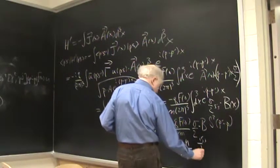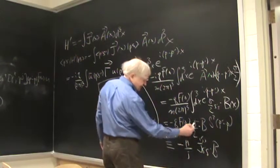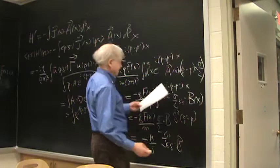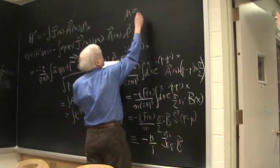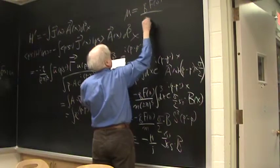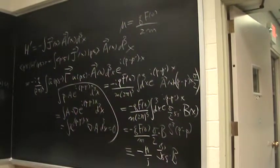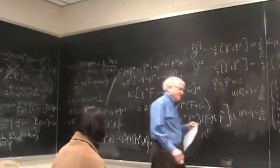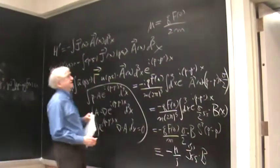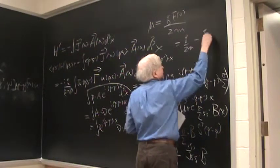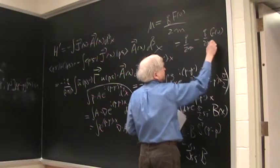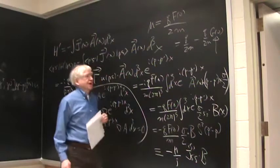times j j s prime s dot b. Well j j is just sigma over 2 and so what we get is the relation that mu is equal to q f of 0 over 2m. Okay, now we saw that f of 0 plus g of 0 was 1. And so what we, so in fact,